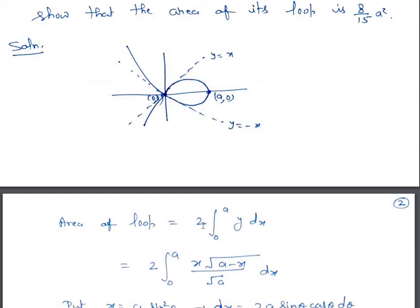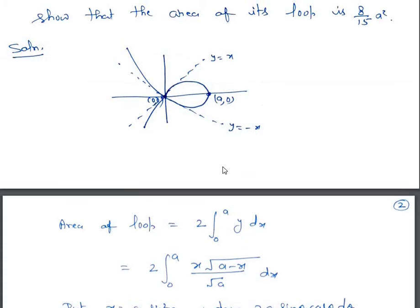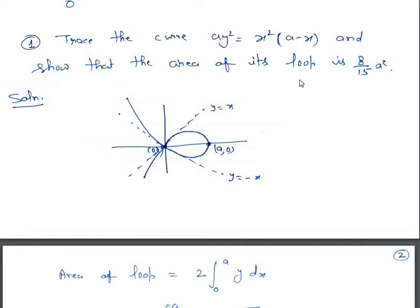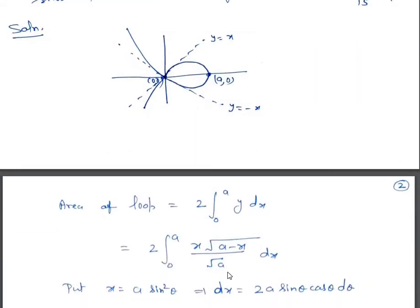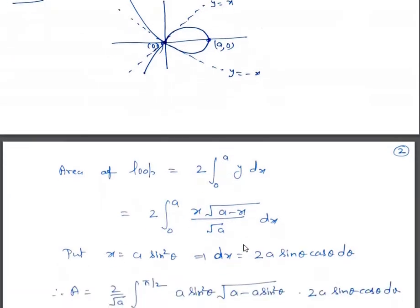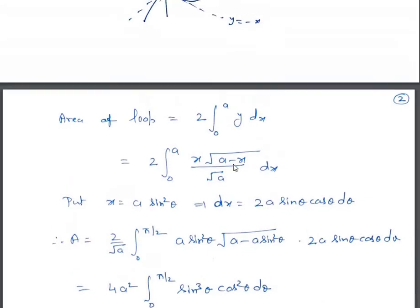From the figure, x varies from 0 to a. So the area of the loop will be 2 times the integral from 0 to a of y dx. We multiply by 2 because the integral from 0 to a of y dx gives the area of the upper portion, and since the curve is symmetric about the x-axis, we multiply by 2. Now substitute the value of y: y = x · √(a - x) / √a. We make the substitution x = a sin²θ, so dx = 2a sinθ cosθ dθ.